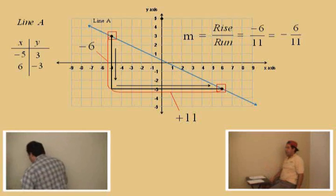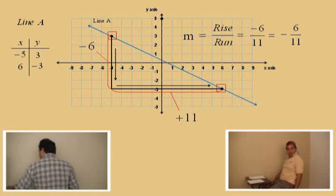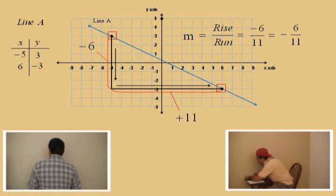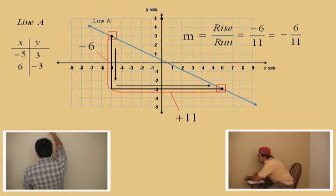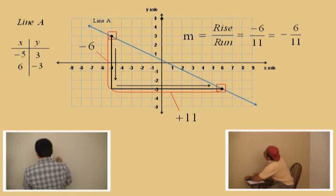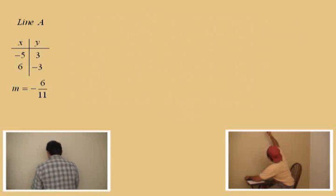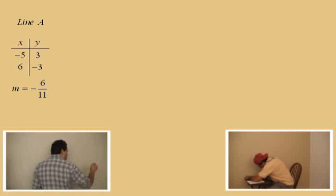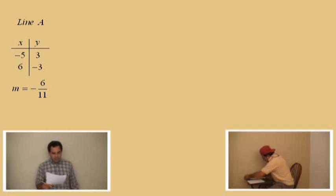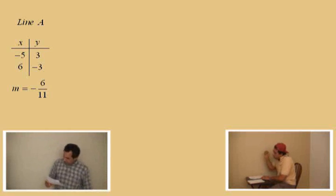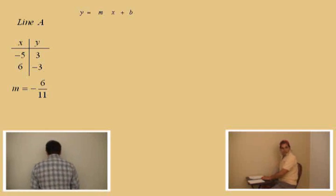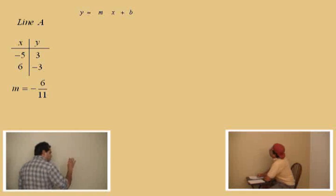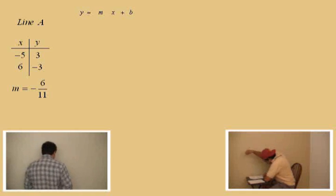Let's go on here. What we're going to do now is list our result. We have a slope of negative six over eleven, and those are two points for line A. Now, Charlie, what is the slope intercept form equation? Everybody usually remembers that one. Y equals mx plus b. Very good. Where m is the slope and b is the y-coordinate of the y-intercept.